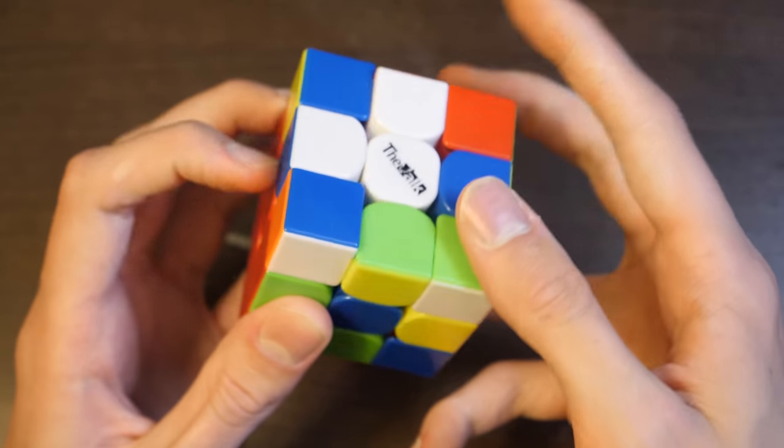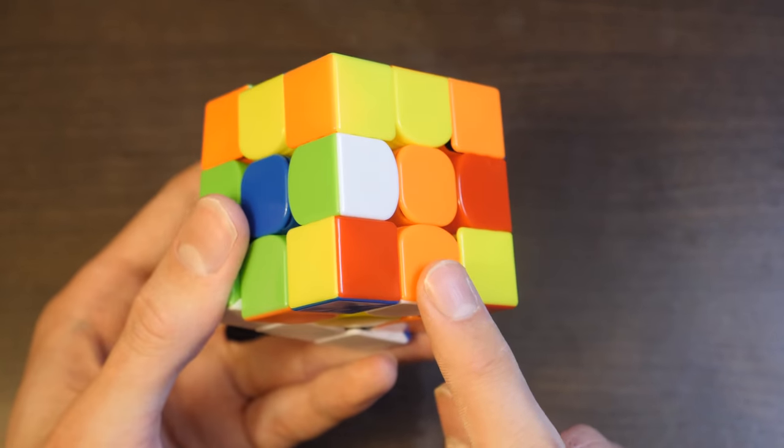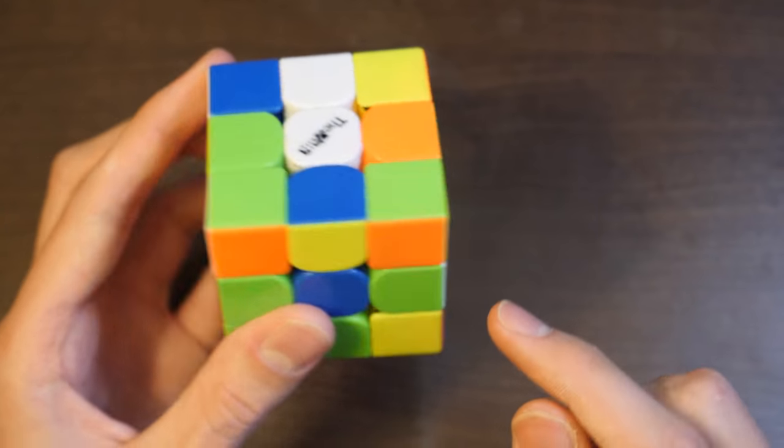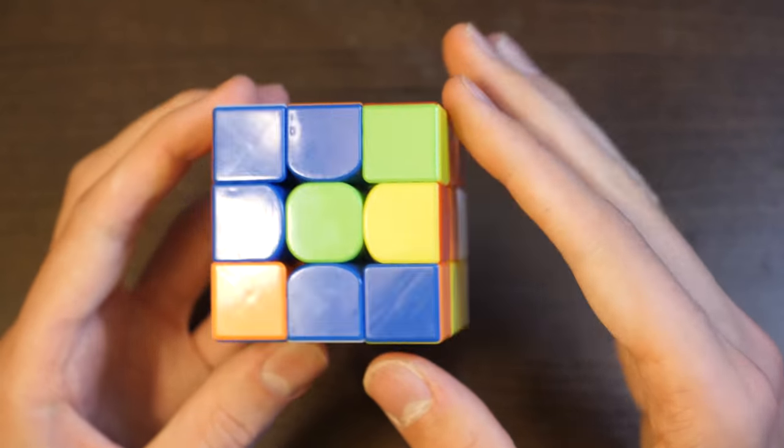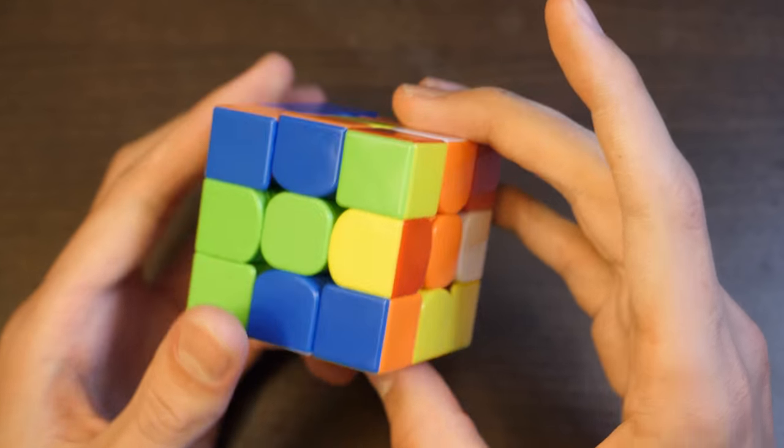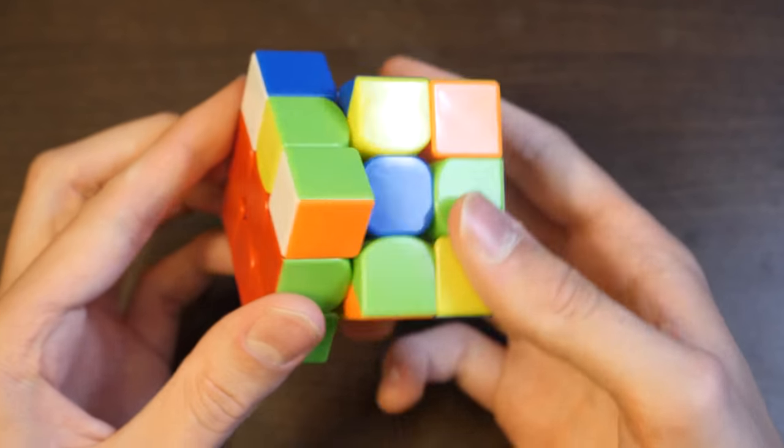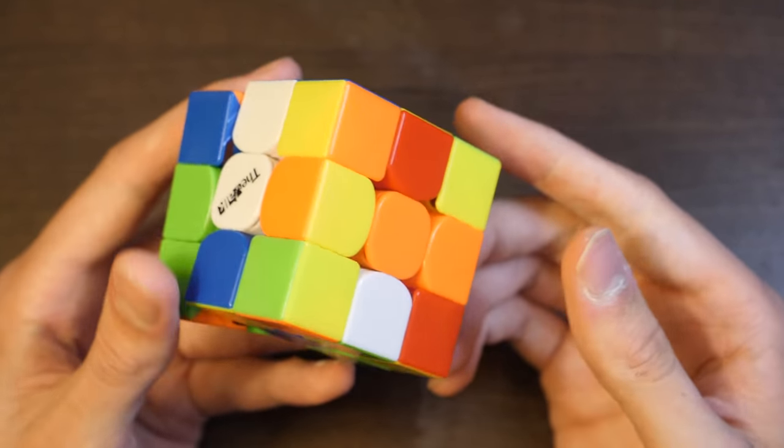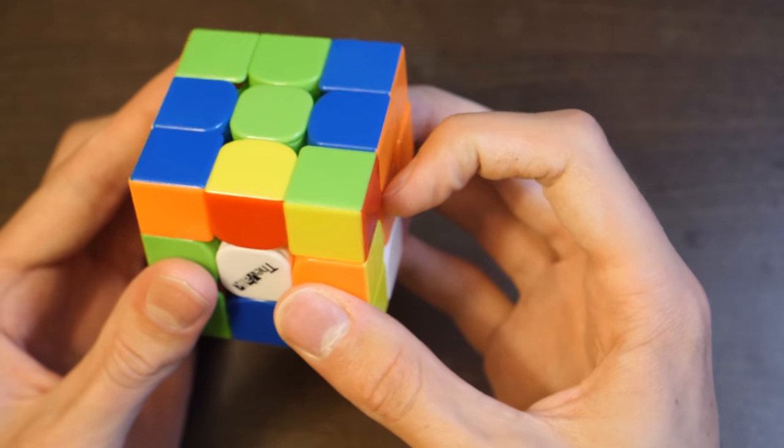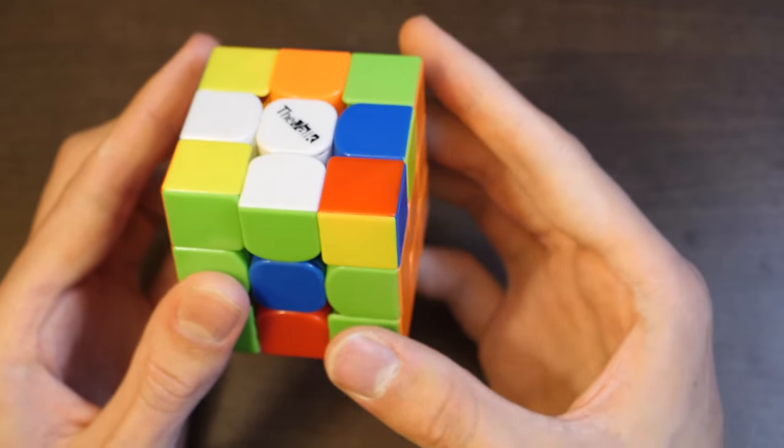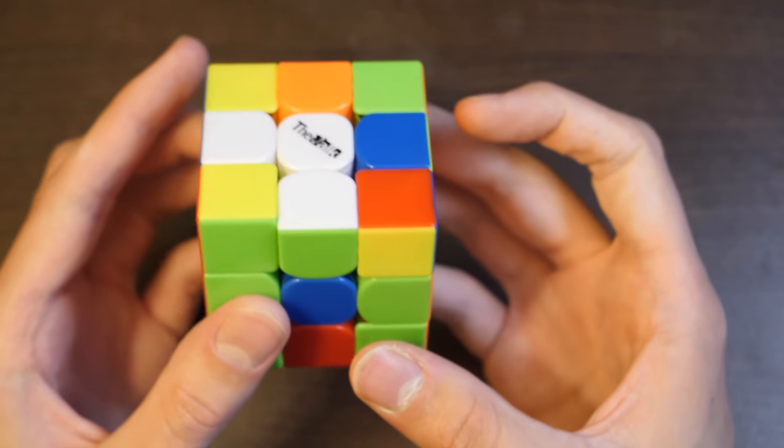Next he's going to solve his edge for second block, the yellow-white. Then he gets a pretty nice case where he's got these two and these two, both one move away from being solved pairs. So he does the one in the back first, and then the one in the front. Pretty elegant solution, very fast.